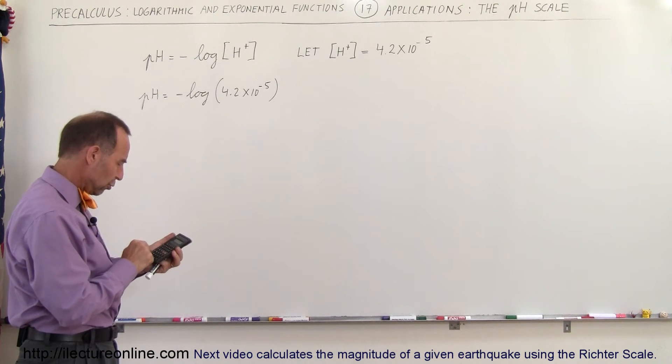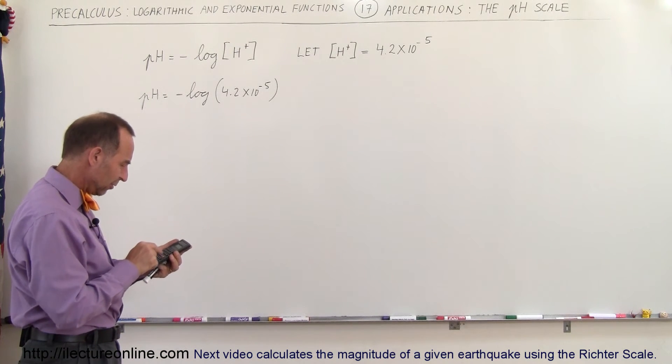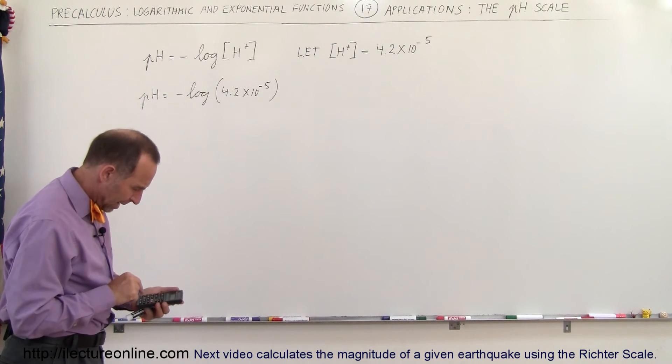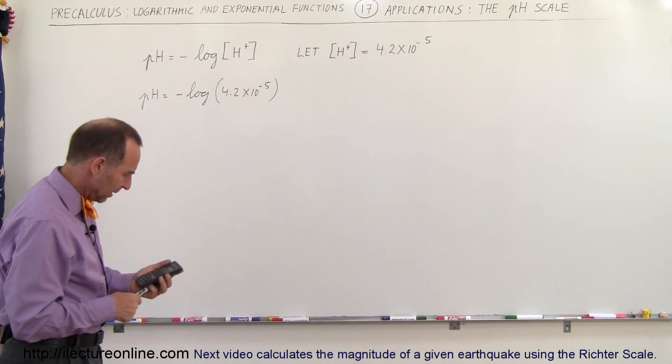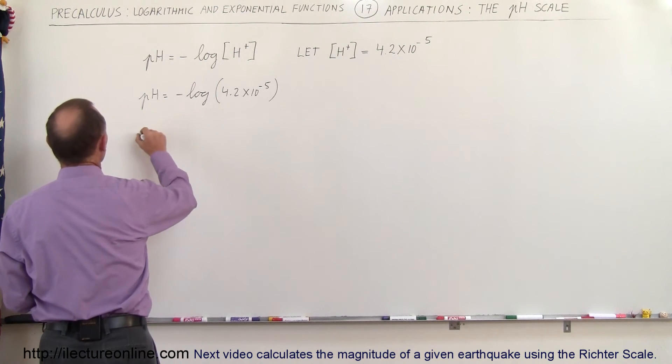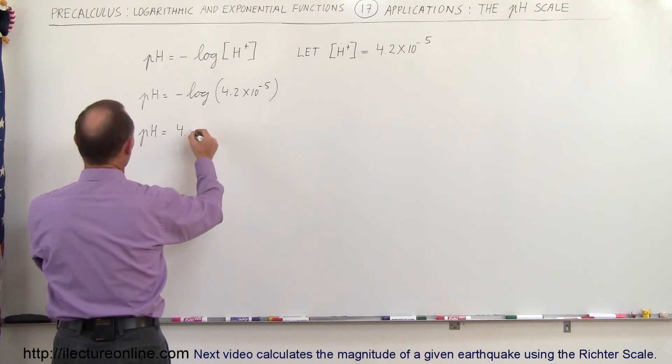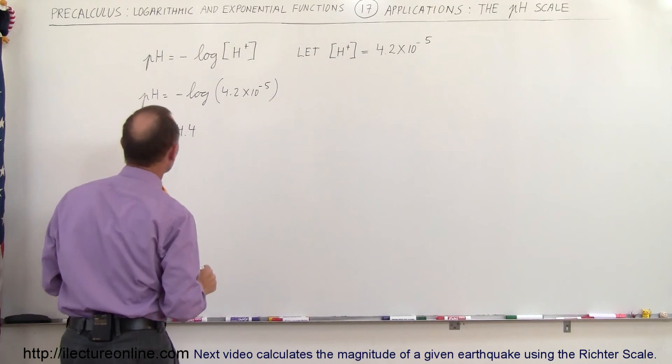So we have 4.2 e to the 5 minus, we take the log, not the natural log of that, and it will multiply times the negative 1. So in this case the pH of this particular solution is equal to 4 point, we'll round it off to one decimal place.